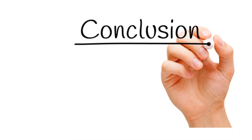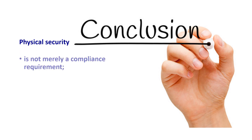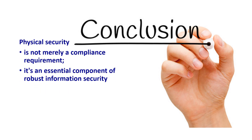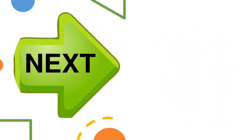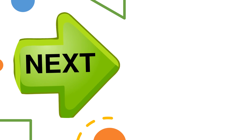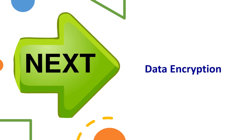In conclusion, PCI DSS V4 Clause 9 emphasizes that physical security is not merely a compliance requirement — it's an essential component of robust information security. By protecting the physical infrastructure that houses payment card data and aligning with zoning principles, organizations can fortify their defenses, comply with PCI DSS, and reduce the risk of data breaches and security incidents. Join us in our next session as we unravel the intricacies of PCI DSS Requirement 3: data encryption. Until then, stay vigilant, stay secure.